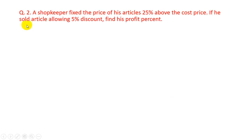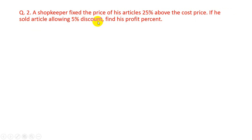Question number 2. A shopkeeper fixes the price of his articles 25% above the cost price. If he sold the article allowing 5% discount, find his profit percent.